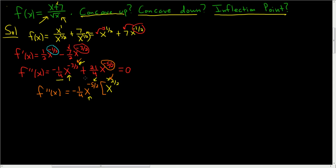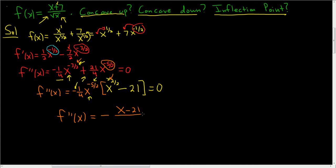There's a plus in the original, and we have a minus factored out, so we need a minus inside, because minus times minus is plus. That gives us minus twenty-one. It cleaned up really nicely. So f double prime of x, writing the negative on the outside, gives us negative times (x minus twenty-one) over four x to the five-halves, set equal to zero.